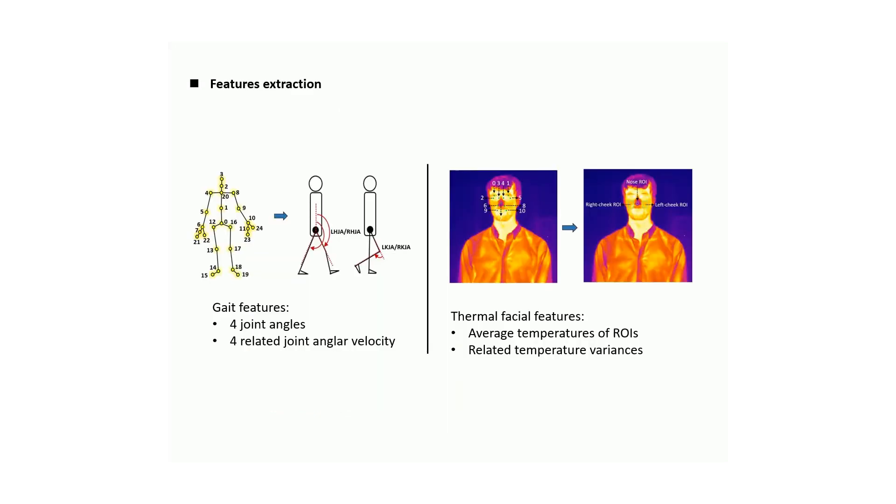For gait features, we use four joint angles and four related joint angular velocities. For thermal features, we use average temperatures of three regions of interest and the related temperature variances.